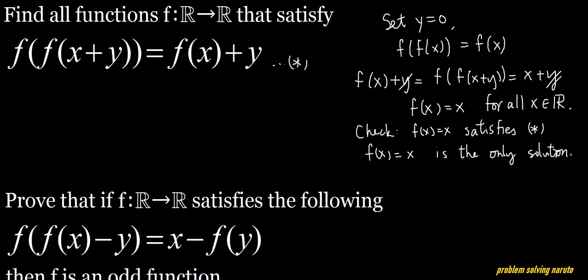Whenever you solve a functional equation problem, try substituting zero first. Then try to make use of f(f(x)): if you get an expression that says f(f(something)) equals something simpler, that is a good direction to follow.